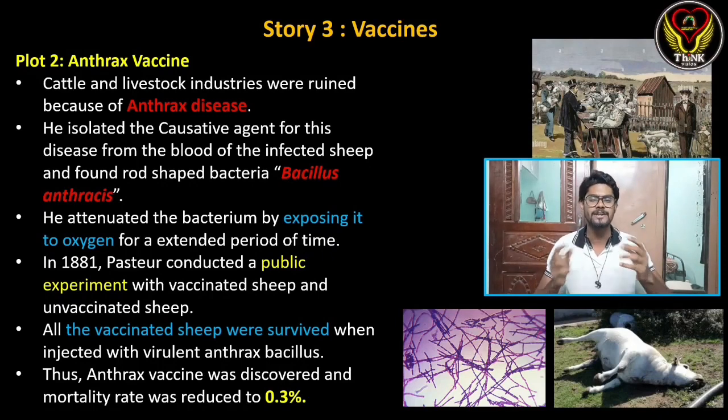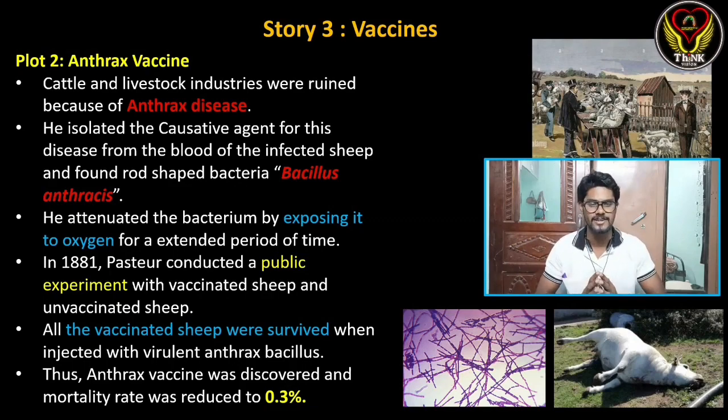There is a bacteria found in the blood of a sheep. It's a rod-shaped bacteria — Bacillus anthracis.